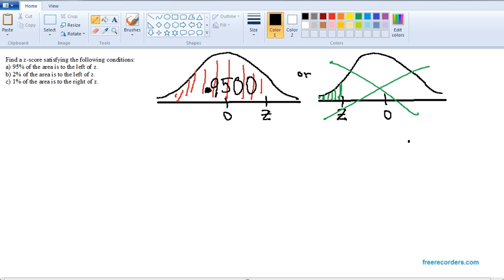The reason we call these reverse normal probabilities is that in the probabilities we did last time, you were given z and you looked up the probability or the area. Here, we're being given the area and we're being asked to find the z-score. So, when we go to our table...